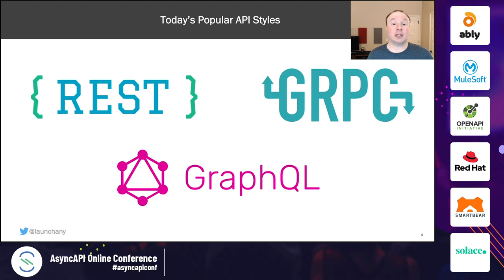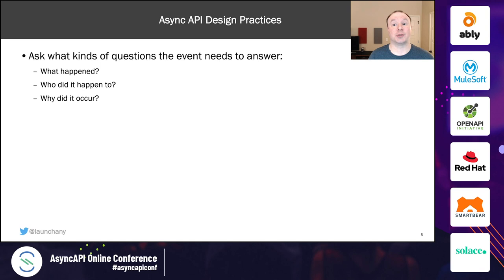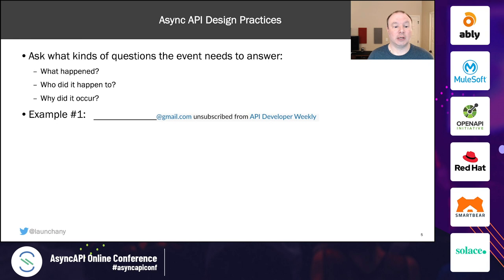Today's popular API styles for synchronous APIs include REST, GraphQL, and gRPC, and we're also starting to see the emergence of a lot of asynchronous APIs. These asynchronous APIs help us to typically share events, but other kinds of messages as well. They oftentimes answer questions like what happened, who did this happen to, and why did it occur — much different than our request-response APIs.